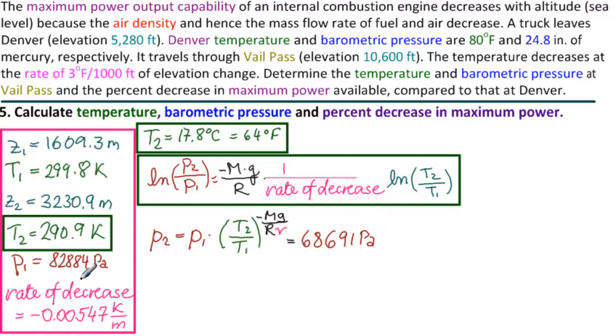It's decreased from 82,884. Let's put that in millimeters mercury. So we would multiply it by 760 and divide by 10 to the 5th. And get 522 millimeters mercury. And then simply do a conversion to inches. You get 20.5 inches mercury. Which makes perfect sense. We've reduced from 24.8 inches of mercury to 20.5 inches of mercury.